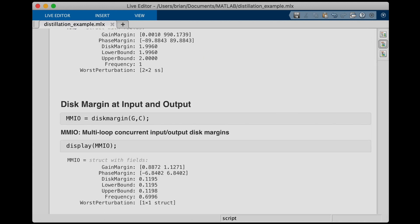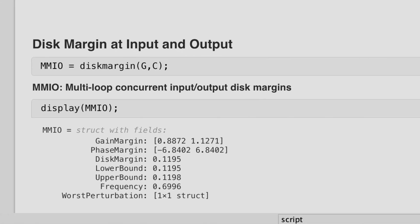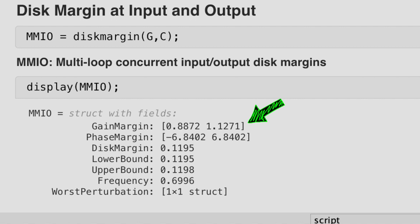However, as I've already spoiled earlier in this video, the system is shockingly not robust to simultaneous variations of both the input and the outputs. Here, our gain margin drops to be between about 0.9 and 1.1, which is really hardly anything at all. And the phase margin is less than 7 degrees. So, it's not a great design after all.